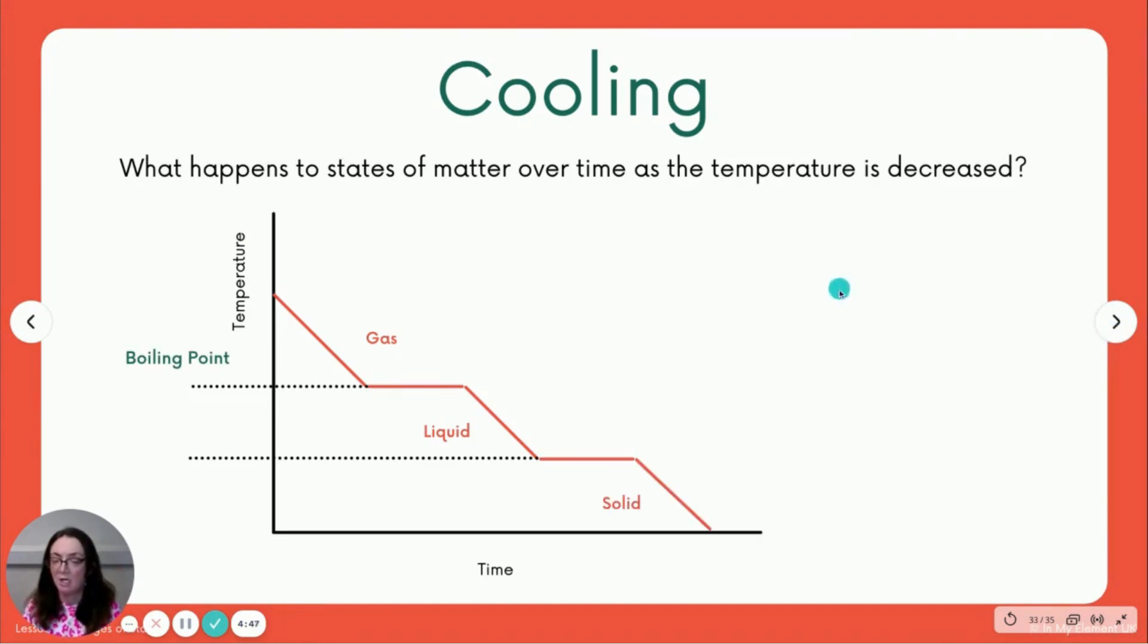So to convert from our gas to a liquid, we have to reach the boiling point, which means the forces between the particles are going to have to become stronger.